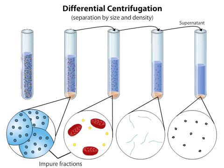For instance, some smaller particles will be found in all pellets, considering some of these particles are already present at the bottom of the tube in the original homogenate.